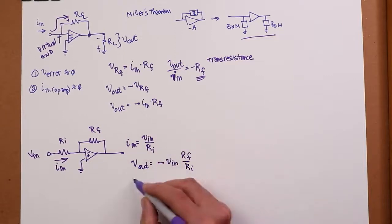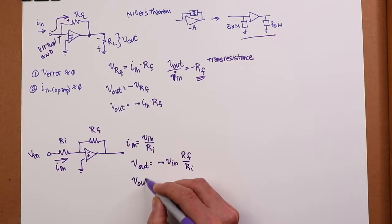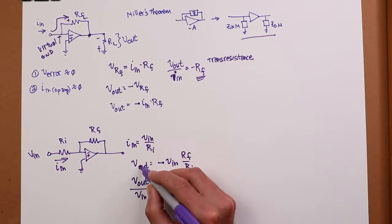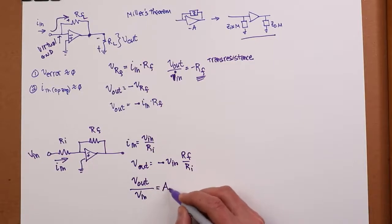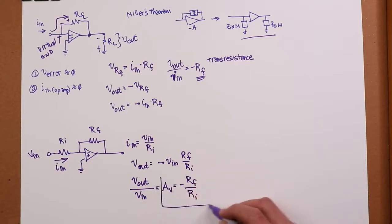Well, if you plug that into this equation up here, then Vout would have to be a negative VIN times RF over RI. Or, more conveniently for us, Vout over VIN, in other words, the gain of the amplifier, is a negative RF over RI.